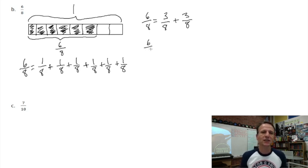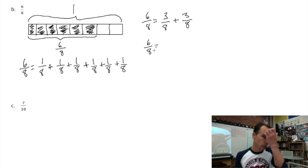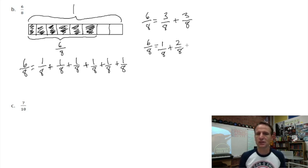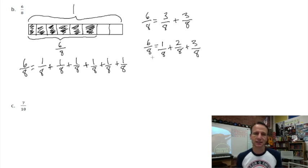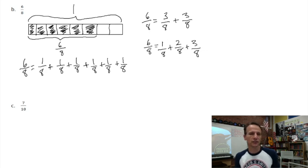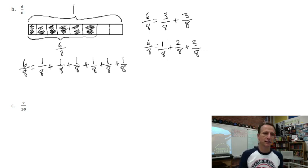Let me get a little fancier and do it with three terms. One plus two plus three is six, so one eighth plus two eighths plus three eighths is six eighths.